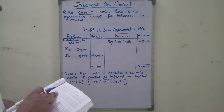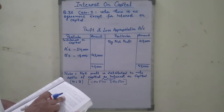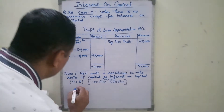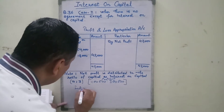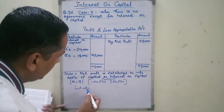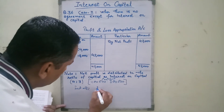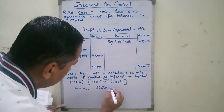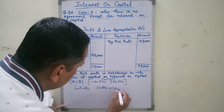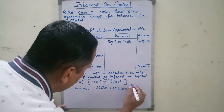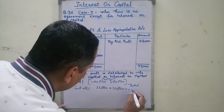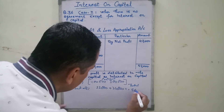They decided to allow interest on capital at 8% per annum. Charging 8% interest on 4 lakh gives 32,000, and on 3 lakh gives 24,000. The total interest comes to 56,000.